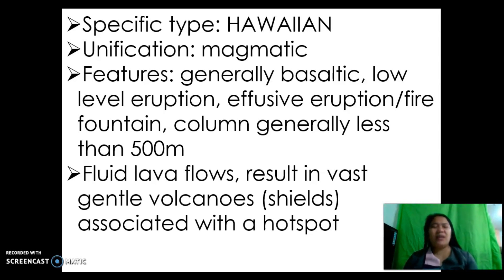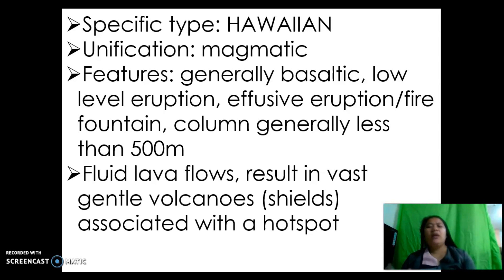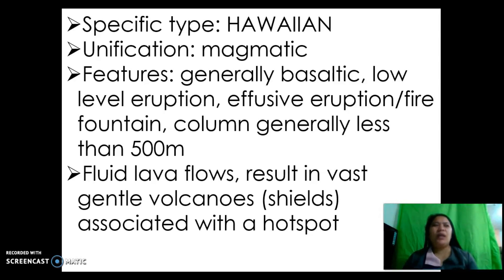It produces fluid lava which, by nature of its magma properties, is basaltic, resulting in vast, gentle volcanoes or shield volcanoes, which are very prominent in Hawaii. Most of the volcanoes found in Hawaii are under this classification. Hawaiian volcanic activity is associated with a hotspot — a region where there is a continuous supply of magma underneath the mantle-core boundary.